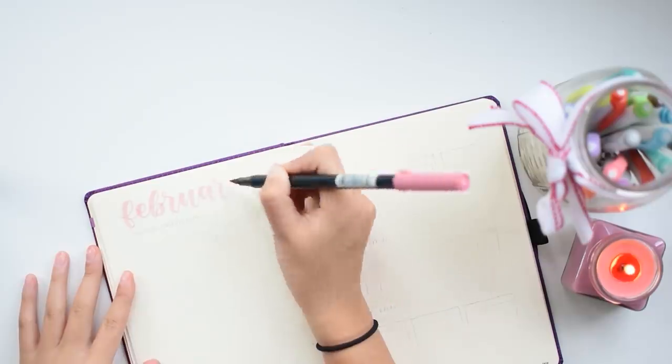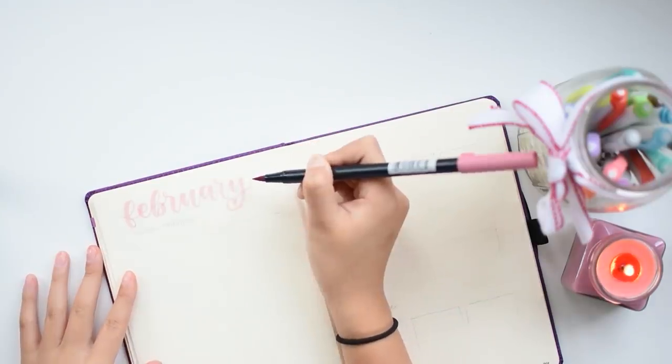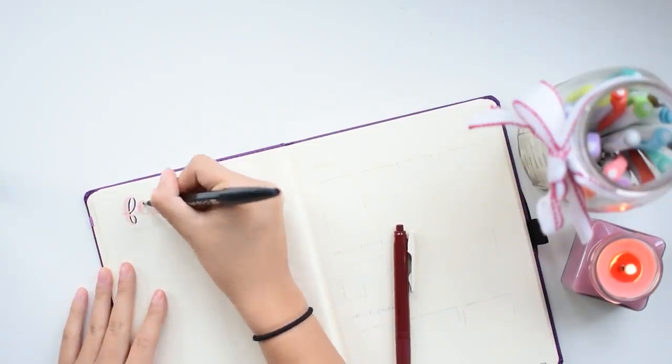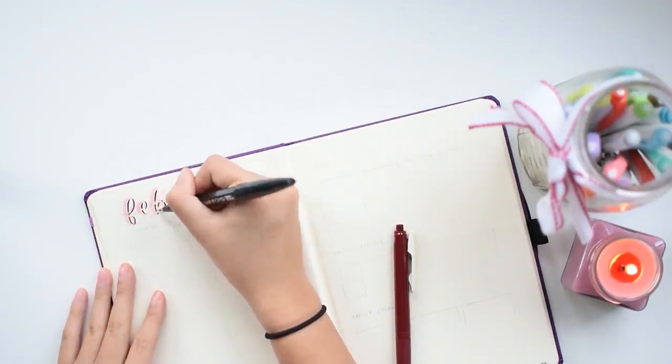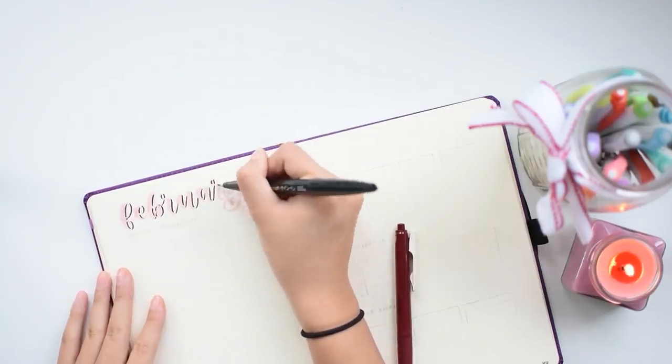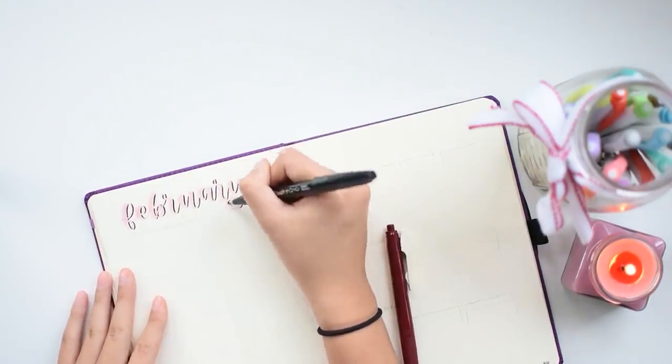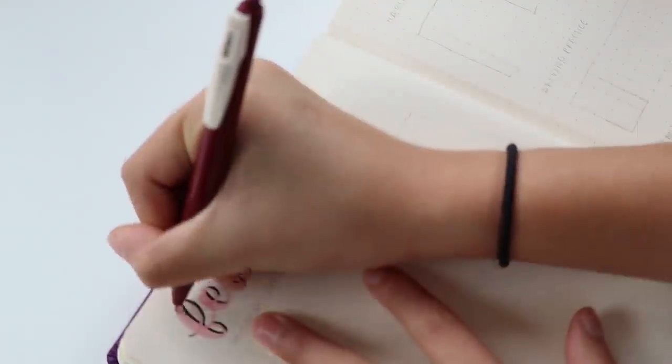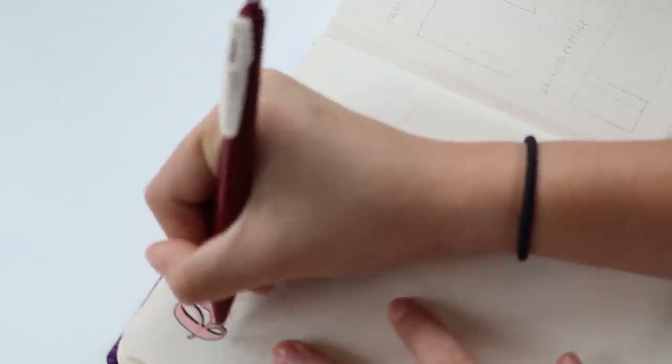Just like with my January plan with me, I'm starting out by lettering the title for the month using a brush pen although this time I'm using a Tombow Dual Brush Pen and it's in pink because February is Valentine's Day so we've got to buy into that commercialized notion of love that incorporates the colors pink and red everywhere but also I just really like the color pink so we're gonna go with it.